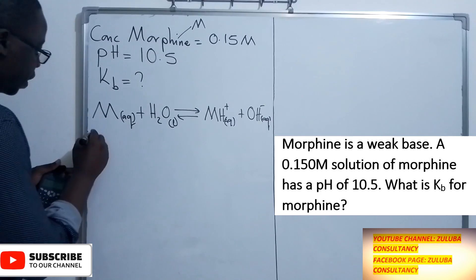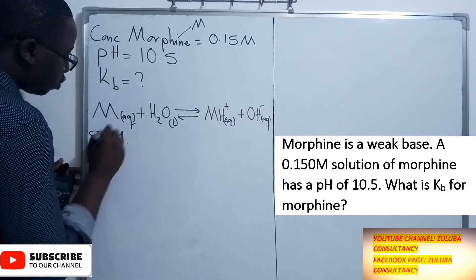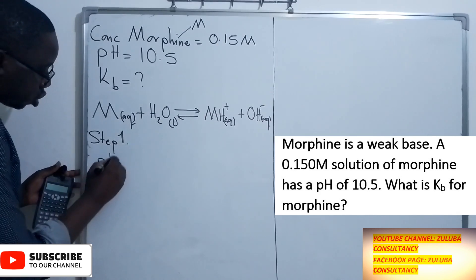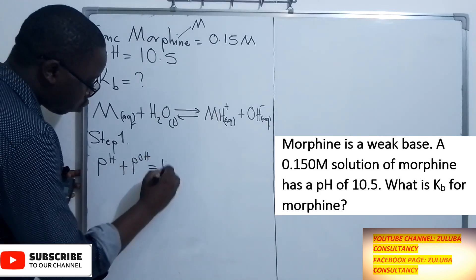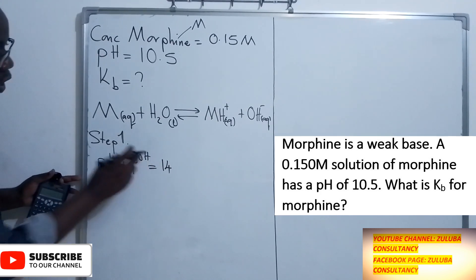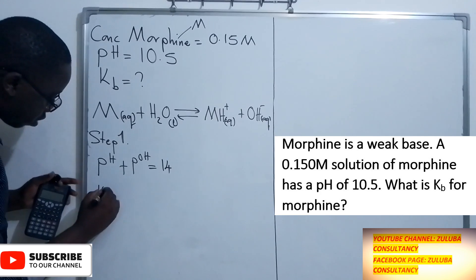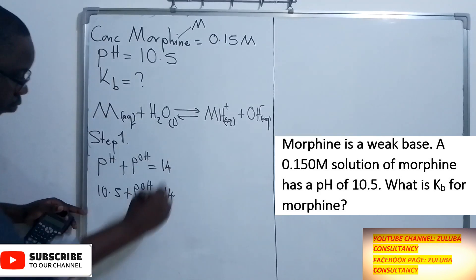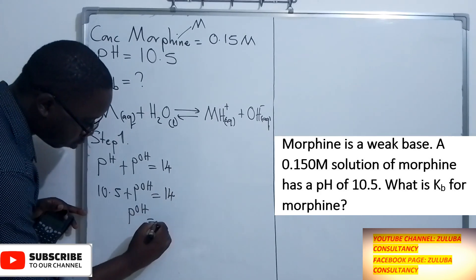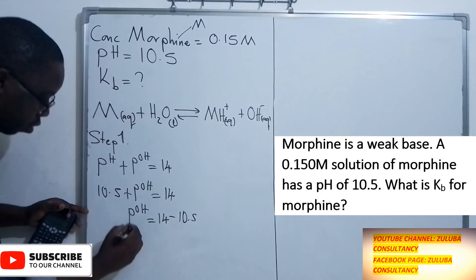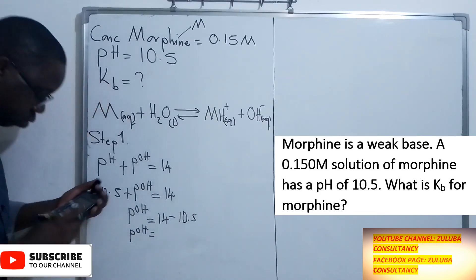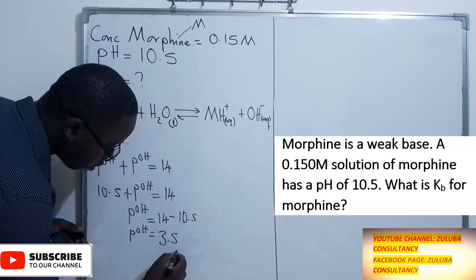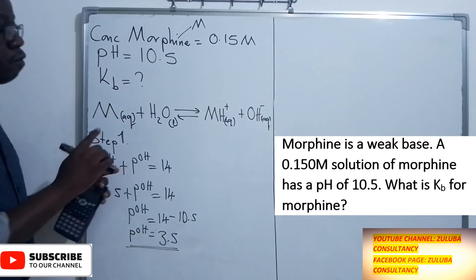In step 1, let's use the pH to find the pOH of this solution. We know that pH plus pOH equals 14. So: 10.5 + pOH = 14, which means pOH = 14 − 10.5 = 3.5. So the pOH of this solution is 3.5.